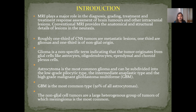Glioma is a non-specific term indicating that the tumor originates from glial cells such as the astrocyte, oligodendrocyte, ependyma, and choroid plexus cells. Astrocytoma is the most common glioma, subdivided into low-grade pilocytic, intermediate anaplastic, and high-grade malignant glioblastoma multiforme. Glioblastoma multiforme is the most common type, comprising 50% of all astrocytomas.